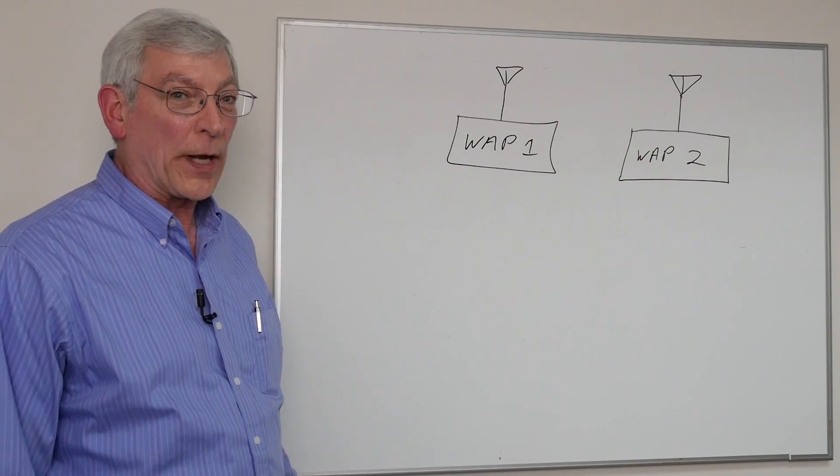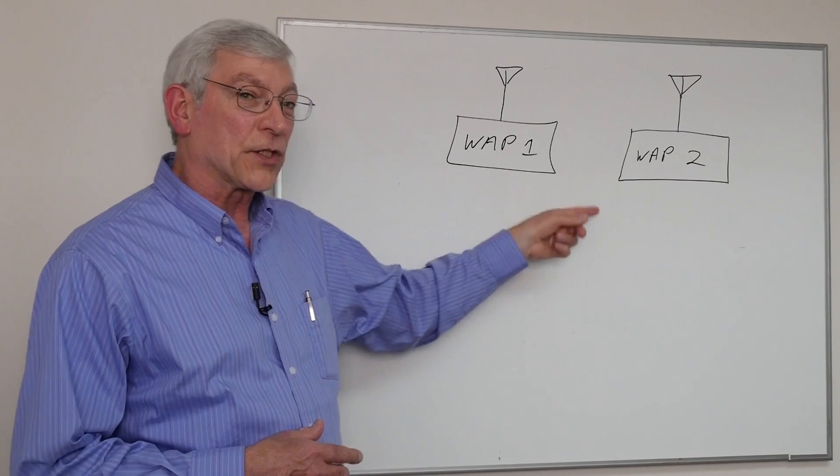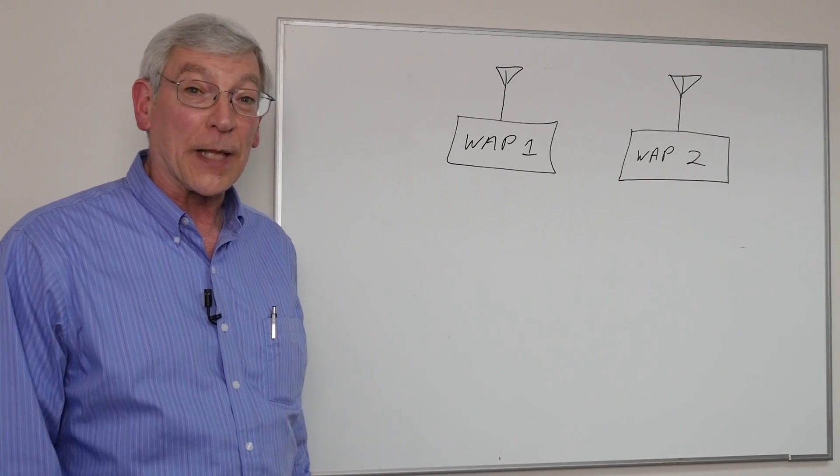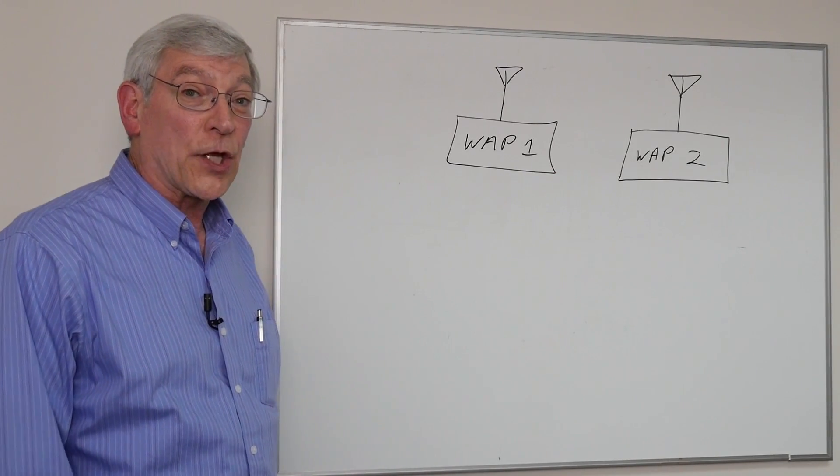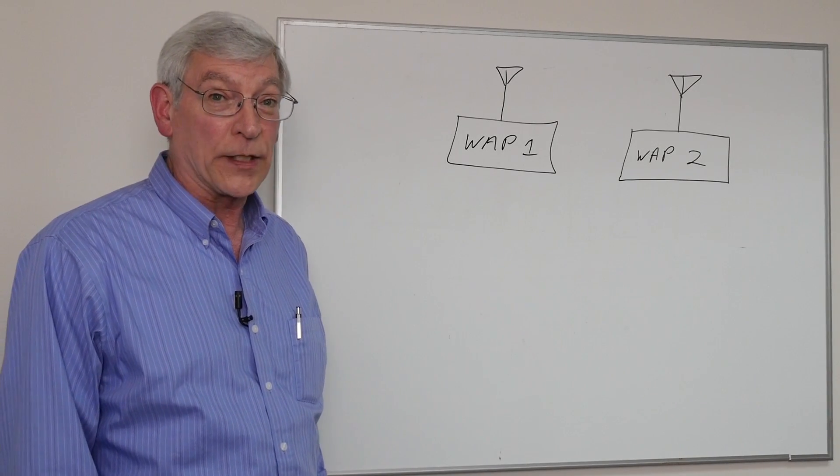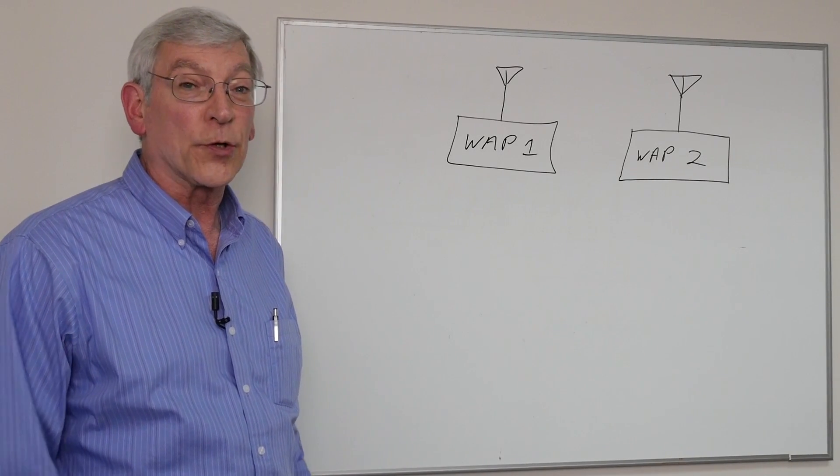These two wireless access points we may have to put on the same channel sometimes. I'll explain the reason for that. Let's say you have a school with two access points in every classroom in order to be able to accommodate 25 to 30 students per class.